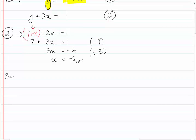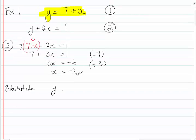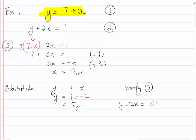There's my x value, and now I have to substitute that in, y equals 7 plus x. So y equals 7 plus negative 2. And that means that y equals 5. And of course, just like earlier, we verify into the other formula, number 2, and there's our first example.